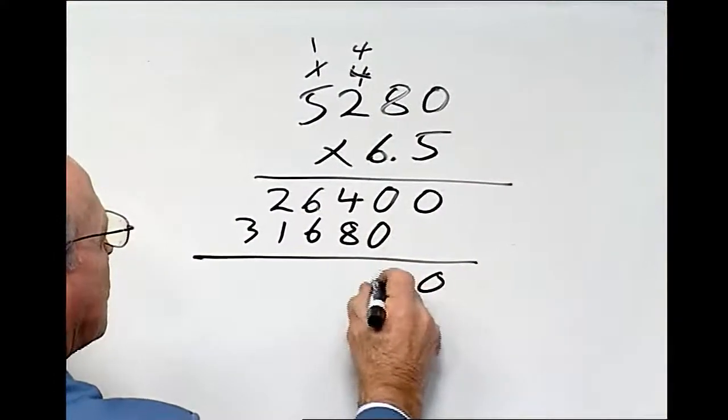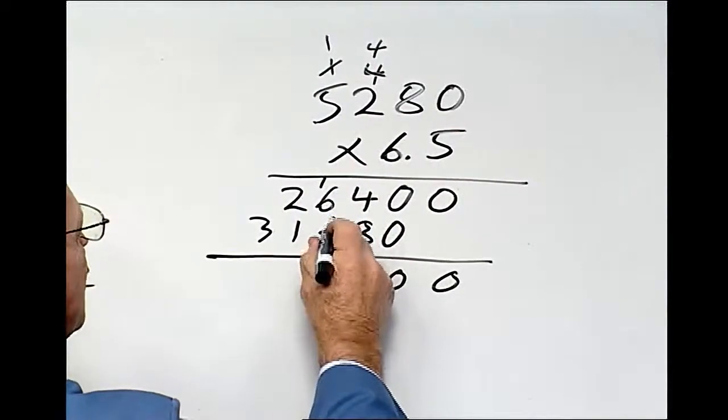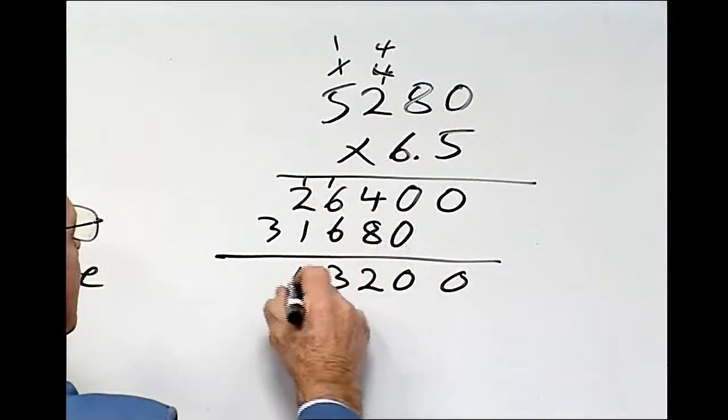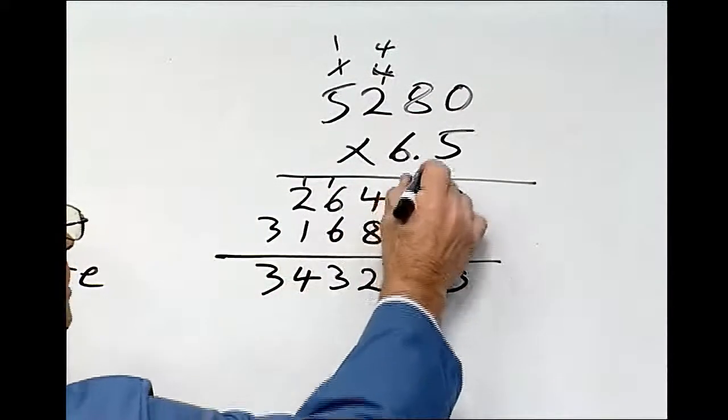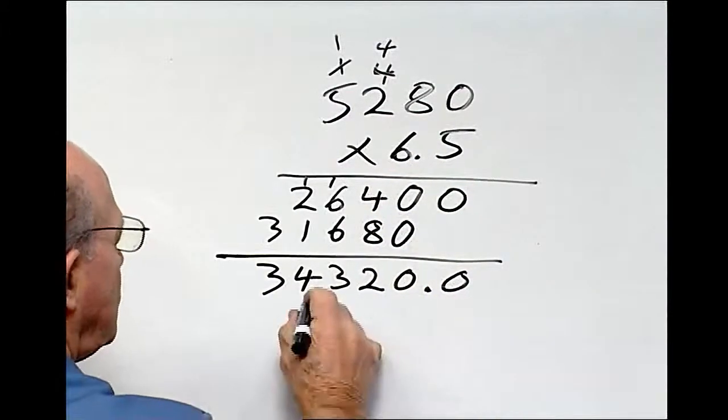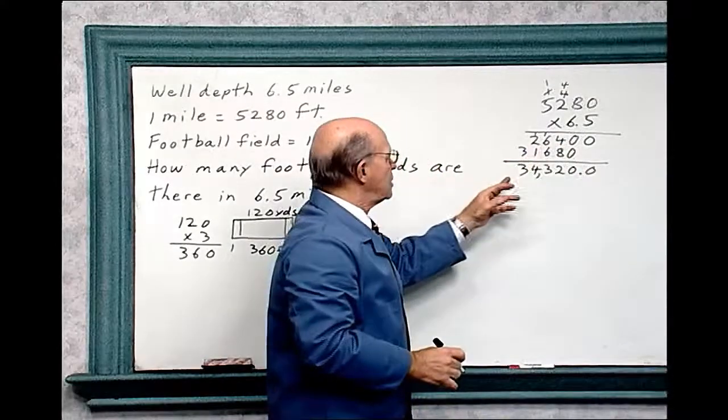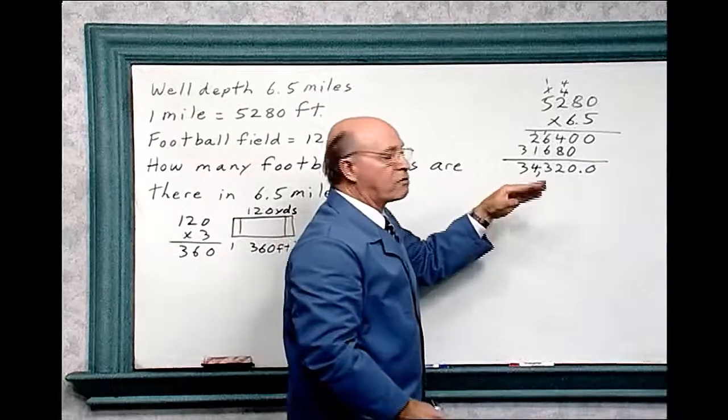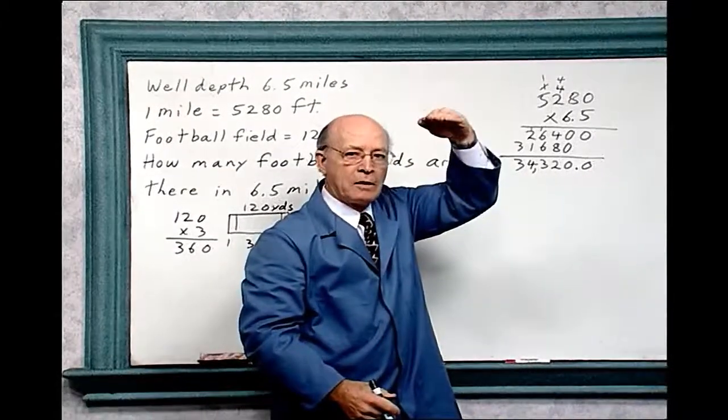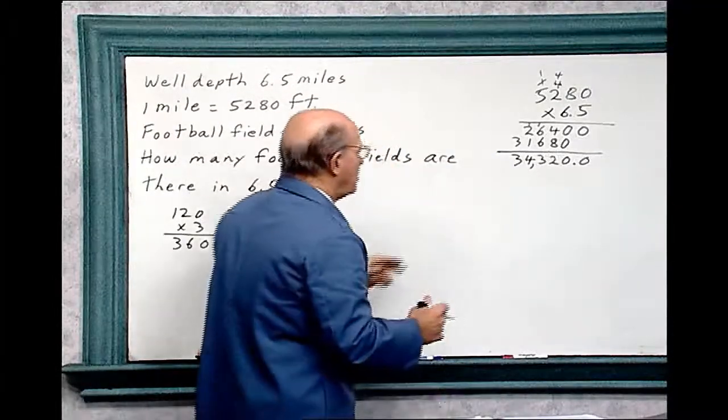So 0, 0, 12. 6 plus 6 is 12, plus 1 is 13. That equals 4, 3. And don't forget there's a decimal point here, so we've got to move that over here. So 6.5 miles down is 34,320 feet down from the bottom of that ship down to where that drill bit goes down into the earth. That's an enormous depth.